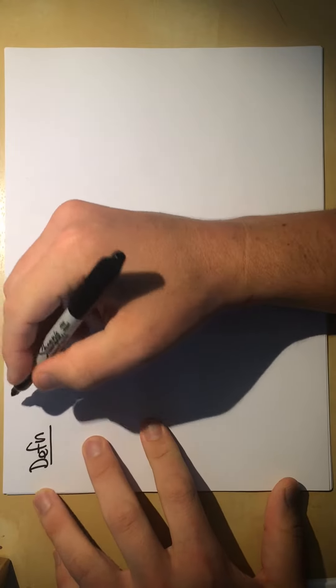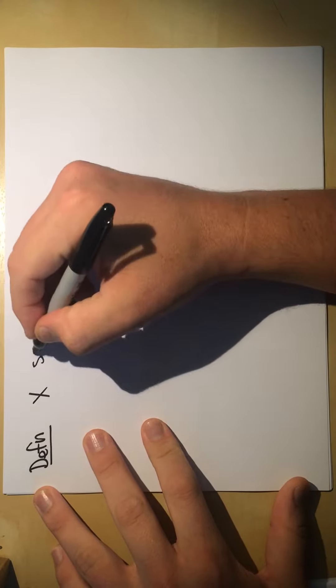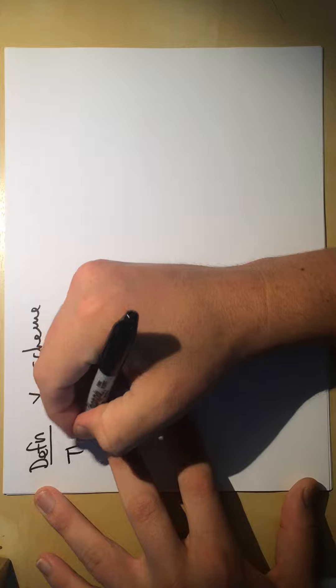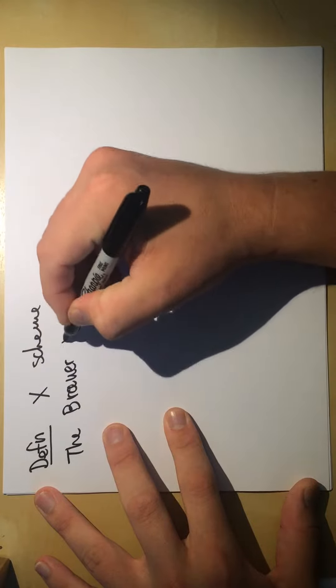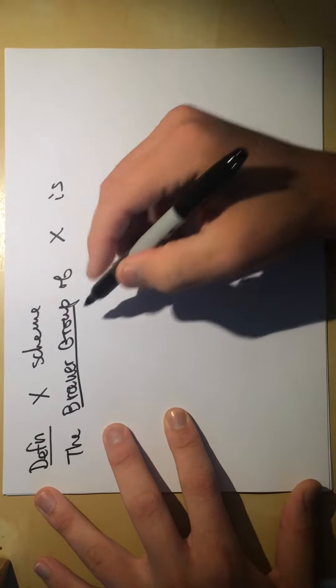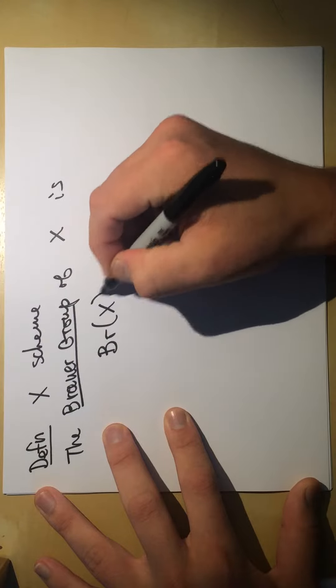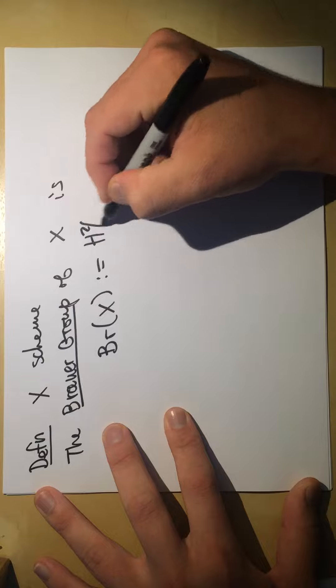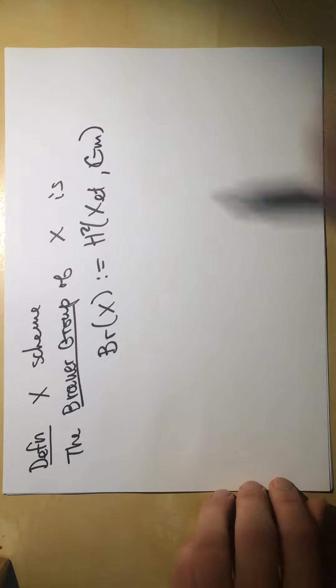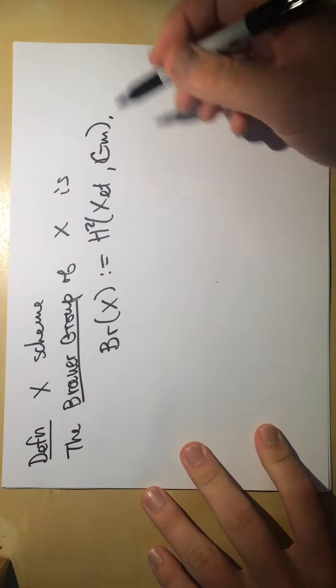I'm going to talk about the Brauer group. So here's a definition: let X be a scheme, then the Brauer group of X, Br(X), is defined to be H²(X, Gm) — the second étale cohomology of X with coefficients in Gm.